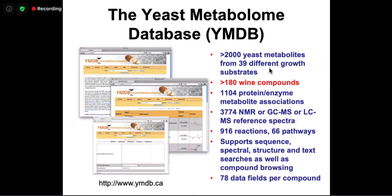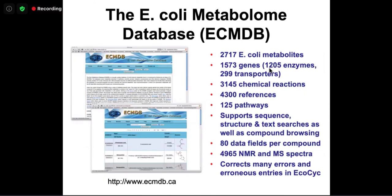As we've evolved toward the microbiome and things like wine, beer, and bread, yeast plays an important role. We created the Yeast Metabolome Database covering wine compounds, yeast metabolites, different growth substrates, gene and metabolite associations, many spectra, and now several hundred pathways. The E. coli Metabolome Database extends our effort to the microbial metabolome, since E. coli is an important model microbe.